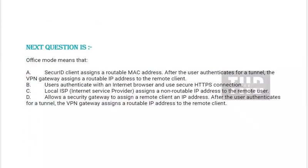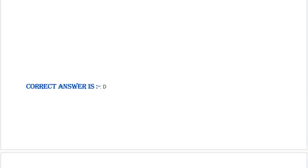Next question: Office mode means that — Option A: SecureID client assigns a routable MAC address after the user authenticates for a tunnel, and the VPN gateway assigns a routable IP address to the remote client. Option B: User authenticates with an internet browser and uses a secure HTTPS connection. Option C: Local ISP assigns a non-routable IP address to the remote user. Option D: Allows a security gateway to assign a remote client an IP address after the user authenticates; for a tunnel, the VPN gateway assigns a routable IP address to the remote client. Correct answer is Option D.